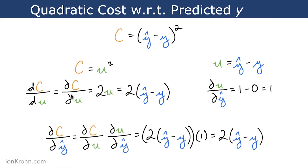We chain together del c del u and del u del y-hat, and by multiplying those by each other, the del u's cancel out and we're left with del c del y-hat. Substituting in the expressions: del c del u equals 2(ŷ − y), multiplied by del u del y-hat which is simply 1. Multiplying anything by 1 leaves us with just that expression, so del c del y-hat comes out to 2 times y-hat minus y. That gives us a piece of the puzzle.